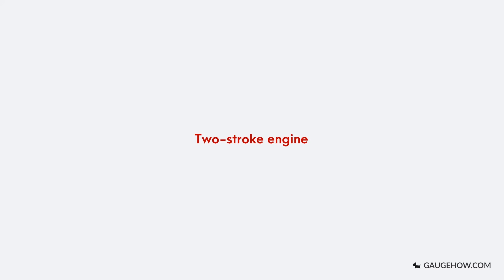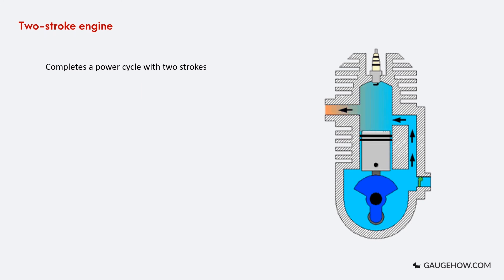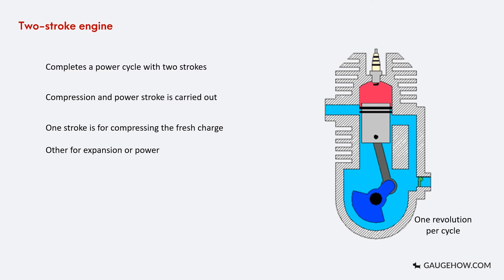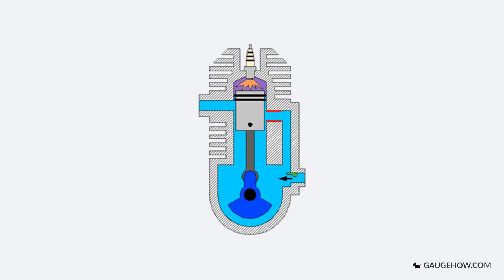The other type is the two-stroke engine. In contrast to the four-stroke engine, a two-stroke engine completes a power cycle with two strokes of the piston and the crankshaft makes only one revolution. The compression and power strokes of the four-stroke cycle are carried out without separate suction and exhaust strokes. One stroke is for compressing the fresh charge and the other for expansion or power. The number of moving parts is less and we have ports instead of valves — generally three ports: inlet port, exhaust port, and transfer port. The inlet port allows charge into the crankcase, the exhaust port discharges burnt gases, and the transfer port transfers charge from the crankcase to the cylinder head.